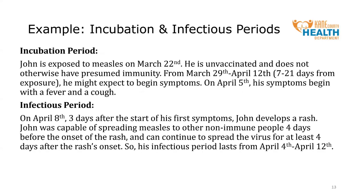Let's go over an example to better understand incubation and infectious periods. John is exposed to measles on March 22nd. John is unvaccinated and has not otherwise presumed immune. Remember, the incubation period lasts from days 7 to 21 after the exposure date. So from March 23rd to March 28th, John is not likely to develop symptoms. However, from March 29th through April 12th, which are days 7 to 21, he can expect to develop the first symptoms of measles. In fact, on April 5th, he develops a fever and a cough, which is 14 days after the date he was exposed. And on April 8th, three days after John's first symptoms developed, he develops a rash, which we consider to be John's day 0. Since the measles infectious period starts four days before the onset of the rash and lasts for at least four days after, we can determine that John could spread measles to other non-immune individuals from April 4th through April 12th.